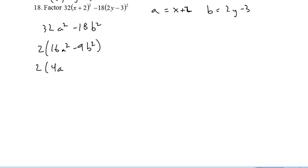Same thing on 18. I'll say a equals x plus 2 and b equals 2y minus 3. So I get 32a squared minus 18b squared. Notice I can factor a 2 out of both of those. That's a relief because now I've got perfect squares with 16 and 9. That's as far as I can go with the a's and b's, and I'll stick my x's and y's back in.